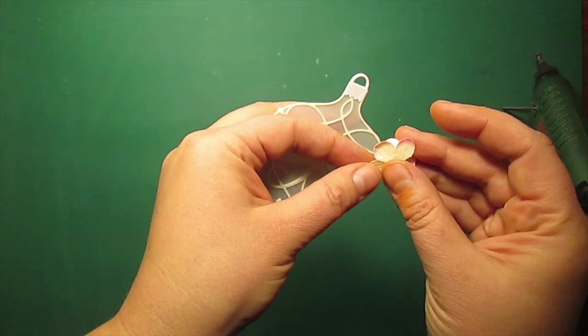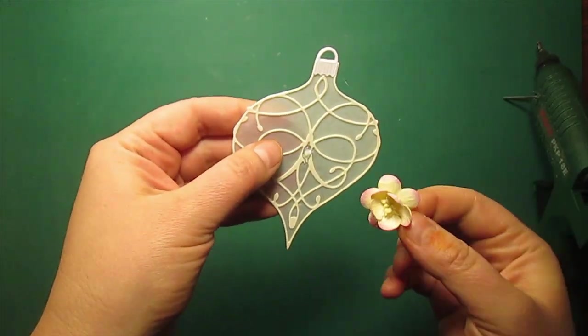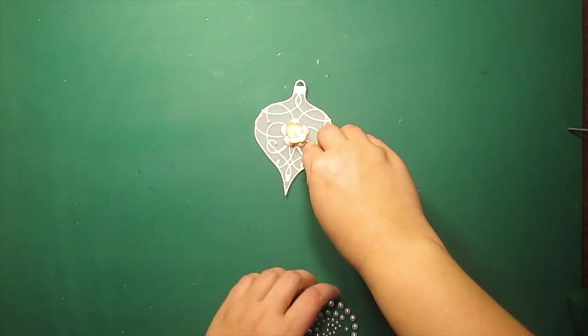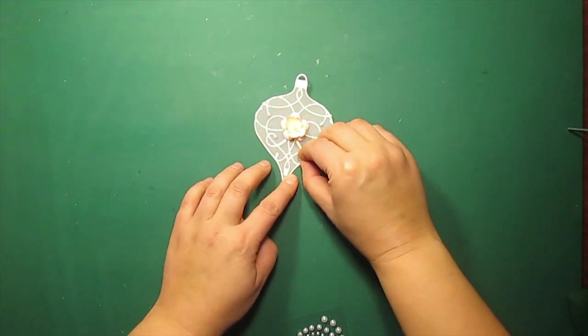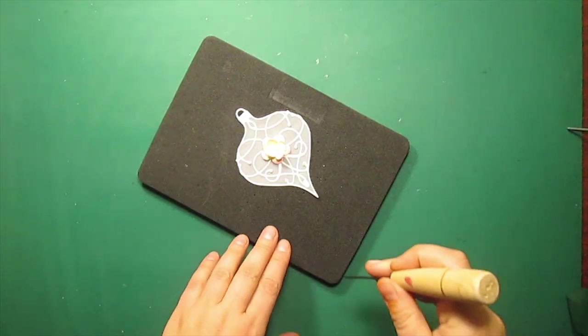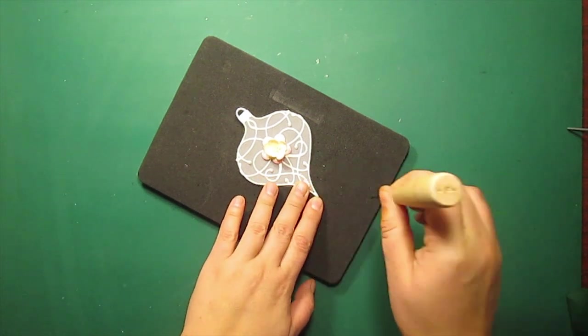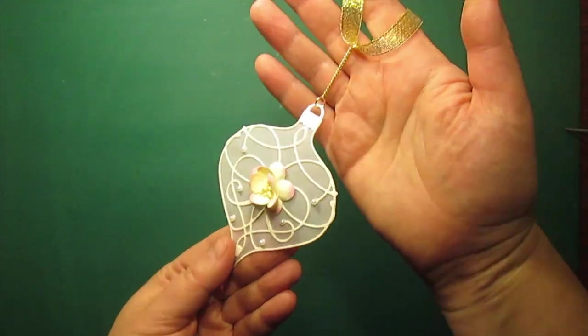And then I will attach a paper flower right in the center of the ornament. I am also attaching six pearls around the flower. Then I am punching a hole and adding a charm and a chain just like I did before.